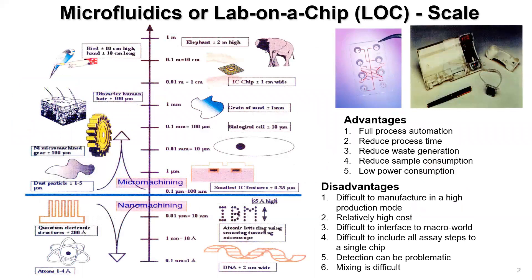This slide gives you an idea of what kinds of length scales we're talking about. Typically, we're not talking about the total length of any fluidic via — we're talking about its cross-section, its depth, and its width. For microfluidics, channels anywhere from about 100 nanometers up to several micrometers or millimeters fall under the domain of microfluidics.